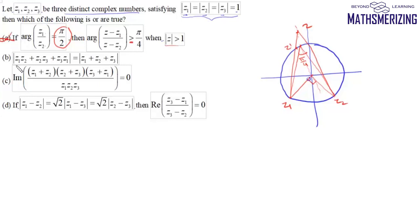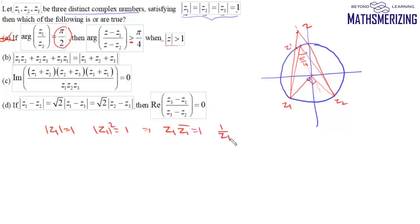Now we look at option B. Since mod Z1 equals one, squaring gives mod Z1 squared equals one, so Z1 · Z̄1 equals one. Therefore I can write 1 upon Z1 as Z̄1. In the same way, 1 upon Z2 equals Z̄2 and 1 upon Z3 equals Z̄3.